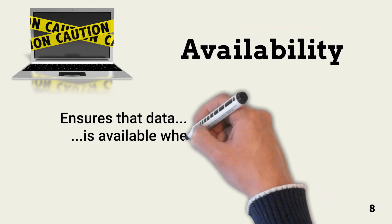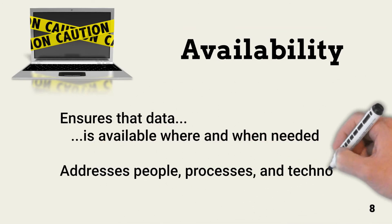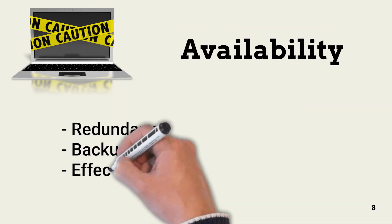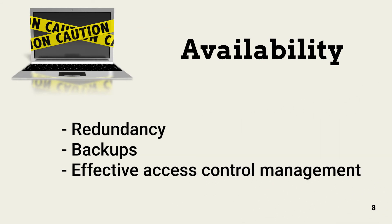Availability controls help ensure data is available to people and processes when and where required. Related controls include elimination of single points of failure through redundancy, performing backups, and effective access control management to ensure users can access what they need when they need it. Access controls are increasingly limited by attributes such as user and device location, time and day of access, resource accessed, and other conditions.